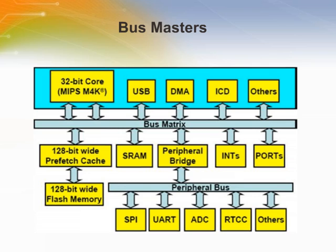At present, CPU, ICD, USB, and DMA are the bus masters in PIC32 architecture. Future PIC32 products may add more bus master modules. The bus master modules run at the same speed as the CPU. All bus masters, except the CPU, essentially have an integrated DMA capability to autonomously perform reads and writes of a peripheral.